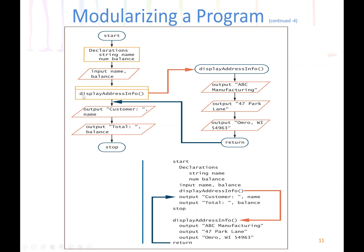The symbol for calling a module in a flowchart is like a rectangle but has a bar over it, distinguishing it from a regular process. In pseudocode it is the same concept — we call the function 'display address info' and define the function separately. The main function serves as the start and stop section of the pseudocode, and we call the module inside the main module.